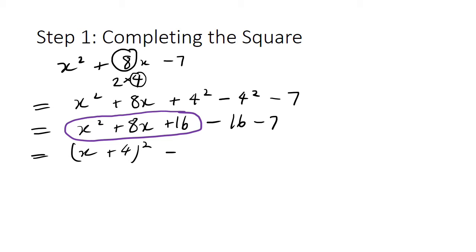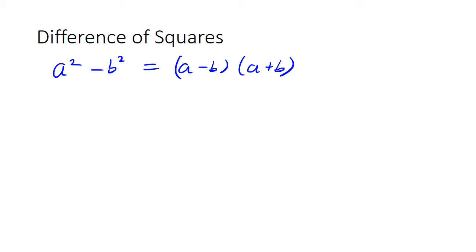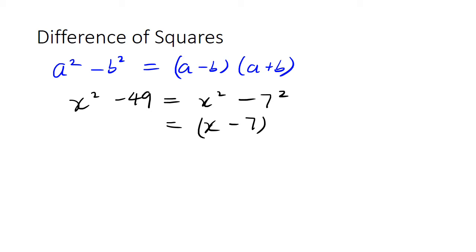Simplifying the numbers at the end gives us minus 23. Before looking at the second step of factorizing by completing the square, we need to recap difference of squares. The definition is: a² minus b² can be factorized into (a-b)(a+b). As an example, x² minus 49 equals x² minus 7², which we can write as (x-7)(x+7). We're going to use that information to complete our factorization using the completing the square method.